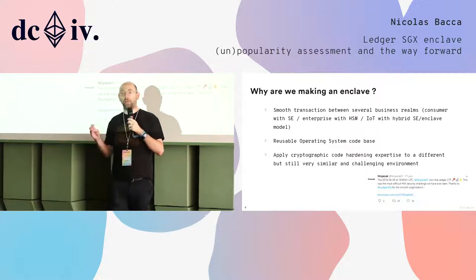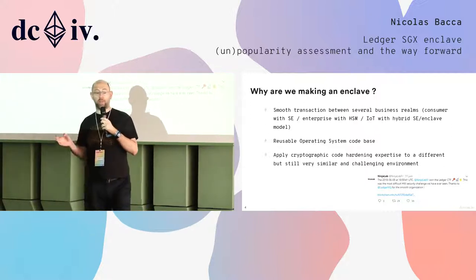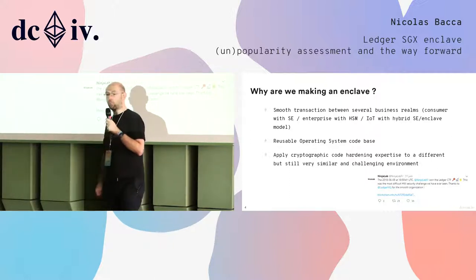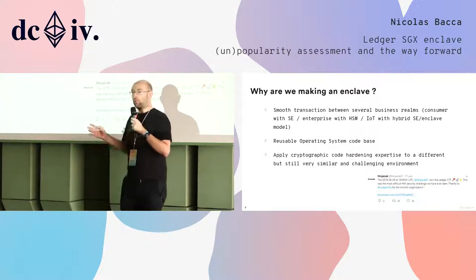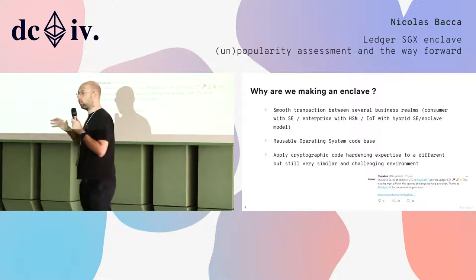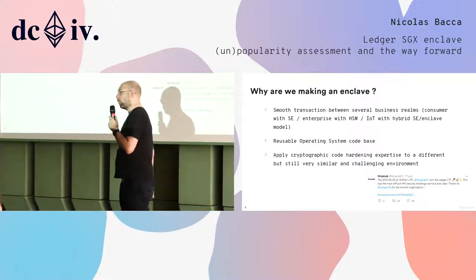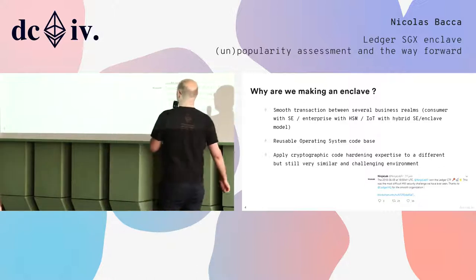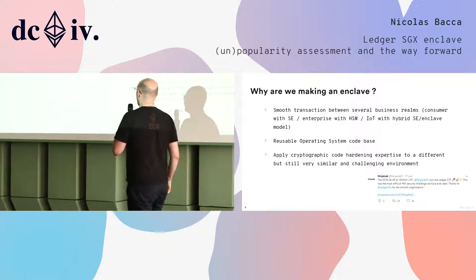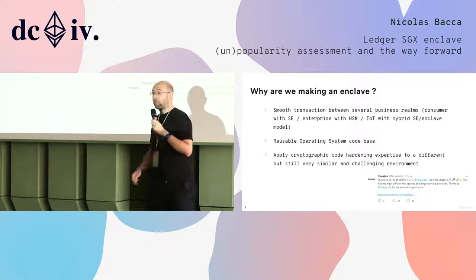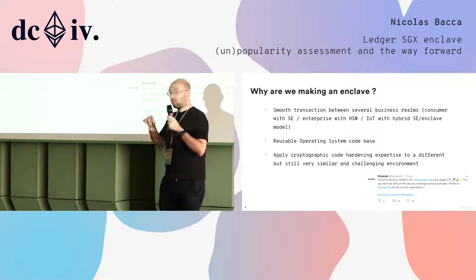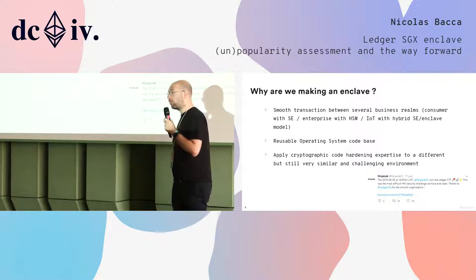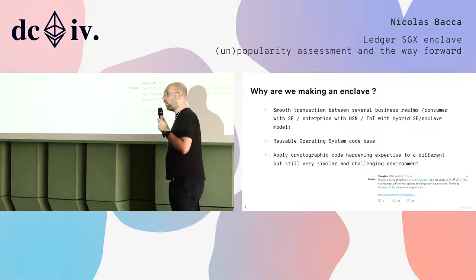We want to transition from a company manufacturing hardware devices to a company selling operating system licenses. Enclaves are a very good target because they already exist in the market. The main obstacle today for people to use a Ledger is actually to buy a Ledger. So if we could find a way to download a Ledger and have interesting security on an existing computer, that would be quite valuable. We have a reusable operating system code base, so working on an enclave and changing from a secure element to an enclave is quite easy for us.